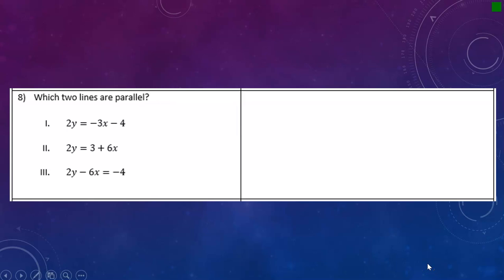Question 8 is asking us to find out which two lines are parallel. Essentially, all we have to do here is solve each of them for y and determine what the slope is. Since we're looking for parallel lines, I'm looking for two lines that have the same slope.